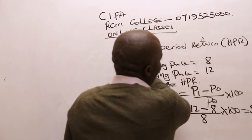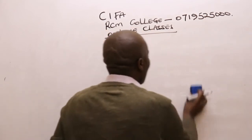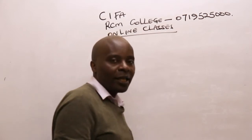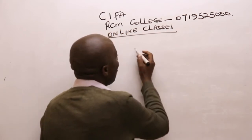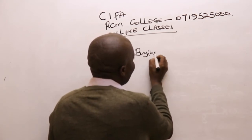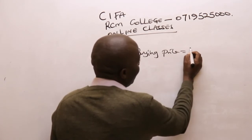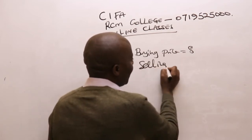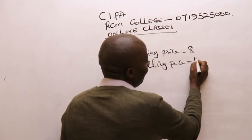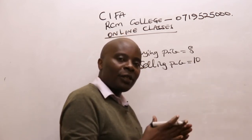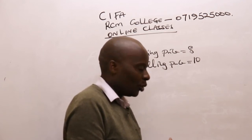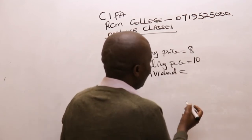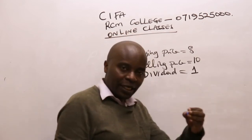Now, ladies and gentlemen, listen to me very well. Look at the second illustration. You are given the same share. This time round, they've told you that the buying price equals eight. One year down the line, you sell this — the selling price is perhaps 10. But on top of this capital appreciation, we happen to be getting a dividend — dividend per share of one. So you get a dividend at the end of the year.